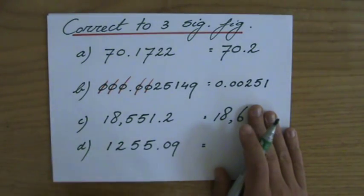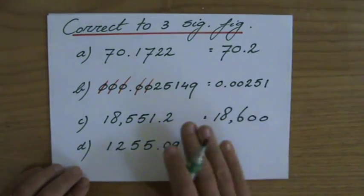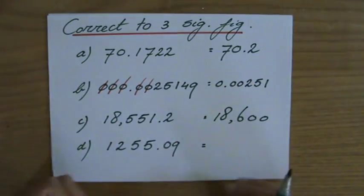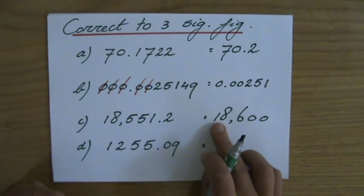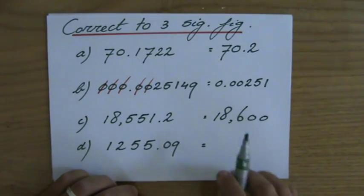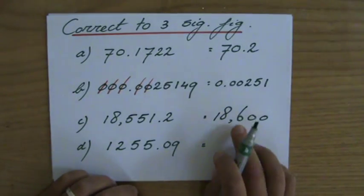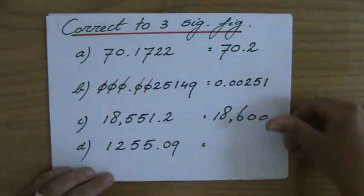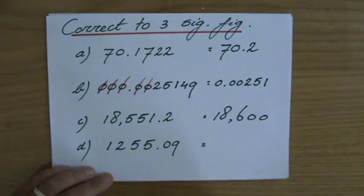And then you put the zero placeholders there. Eighteen thousand six hundred, because we're not talking about 186. One, two, three significant figures, and you put the zeros there to keep the number in its context, because otherwise the place value would differ. These are now the six hundreds, and if I wouldn't write those zeros there, the six would be a unit. So the zero placeholder keeps everything in its correct place value.